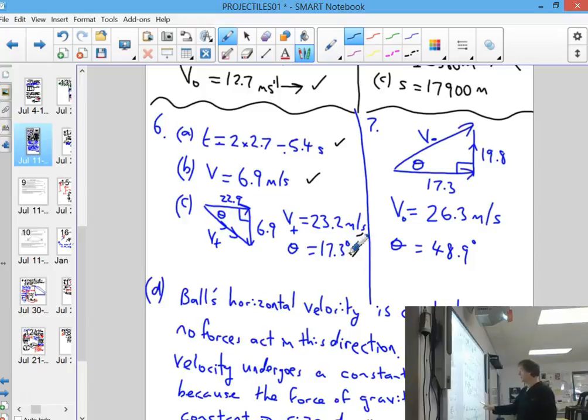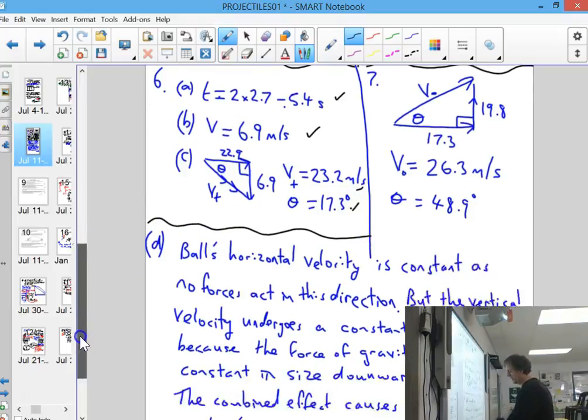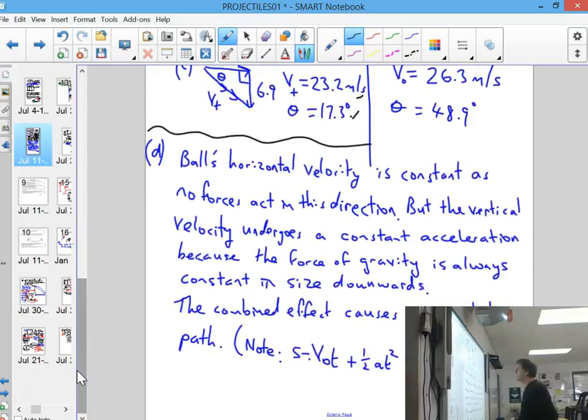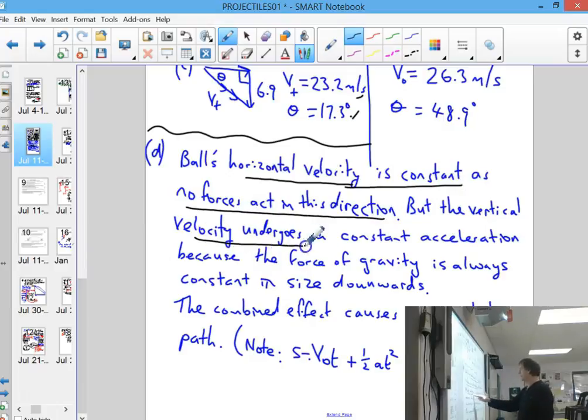Question six also, I should talk about what the projectile motion is doing here. So why is it a parabola? I would talk about the ball's horizontal velocity is constant because no forces are acting in that direction. While that's going on, the vertical velocity is only getting a constant acceleration.